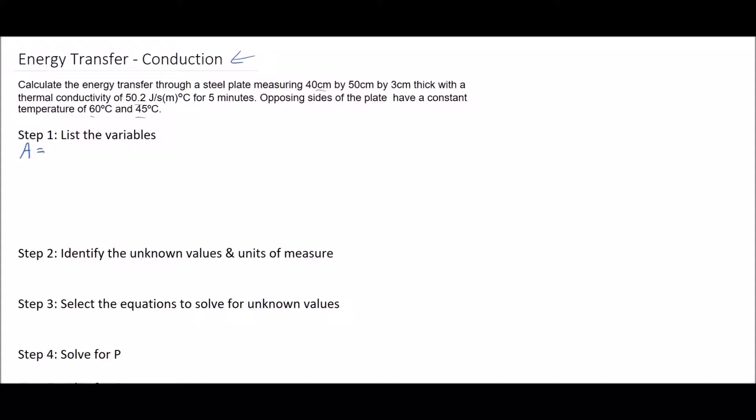The first thing we need is the area, and this area must be in meters squared. As you can see we're given this in centimeters squared, so the area is just length times width. It needs to be in meters, so we have 40 centimeters which is 0.4 meters, and 50 centimeters which is 0.50 meters.